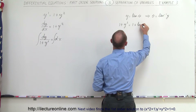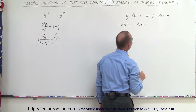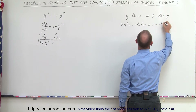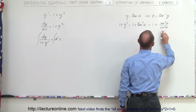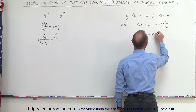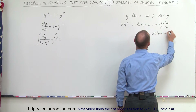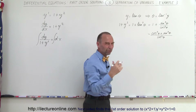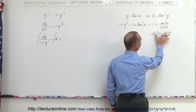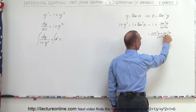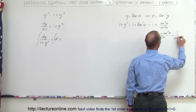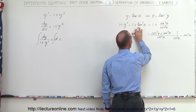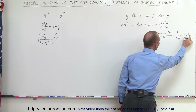1 plus y squared becomes 1 plus the tangent squared of theta. The tangent squared of theta is sine squared of theta divided by cosine squared of theta. Writing this over a common denominator gives us cosine squared plus sine squared of theta, all divided by cosine squared of theta. Since cosine squared plus sine squared equals 1, this simplifies to 1 over cosine squared of theta, which is secant squared of theta. So 1 plus y squared equals secant squared of theta.